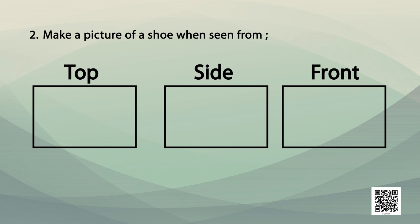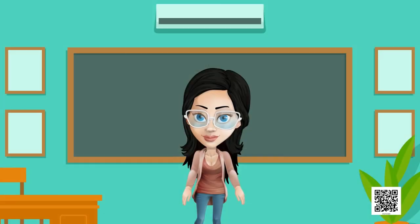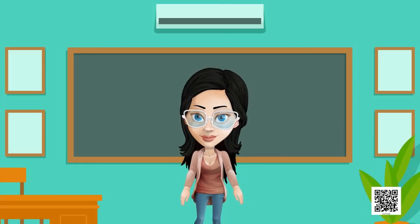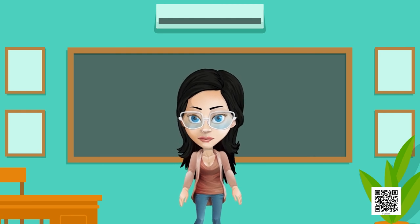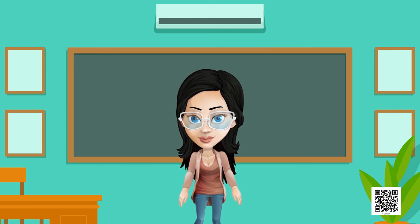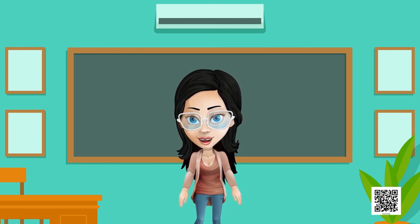Question number two: make a picture of a shoe when seen from above, from the side, and from the front — that is, the top view, the side view, and the front view of a shoe. You will have to draw three different pictures of the same shoe. That was all for this chapter. I hope you all enjoyed it and understood it well. Thank you, children. Have a nice day!